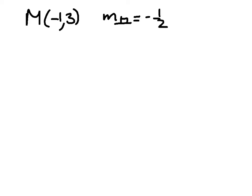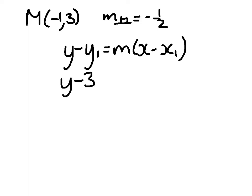So I want the equation of the line going through minus 1, 3 with a gradient minus 1 half. Using Y minus Y1 equals M times X minus X1, Y minus 3 equals minus 1 half times X plus 1.